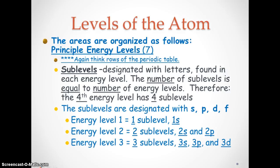The sublevels are designated with the letters S, P, D, and F. Energy level number one has one sublevel, 1s. Energy level two has two sublevels, 2s and 2p. Energy level three has three sublevels, 3s, 3p, and 3d. And energy level four has four sublevels, 4s, 4p, 4d, and 4f.